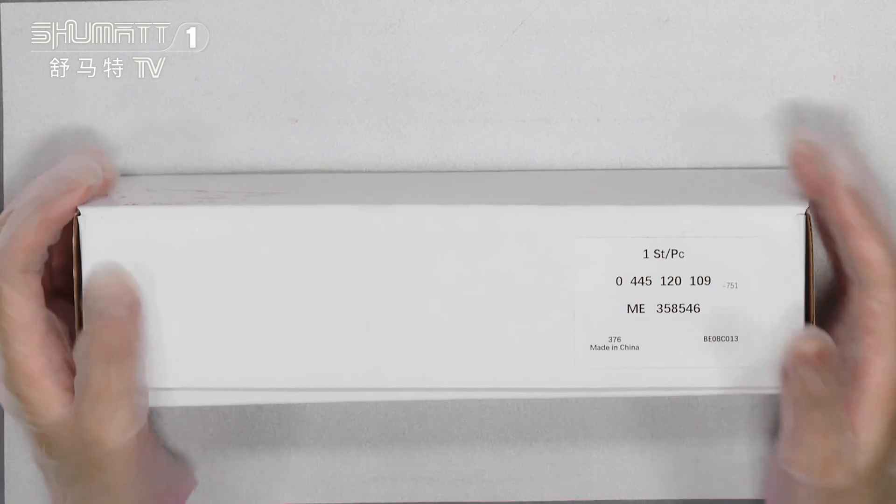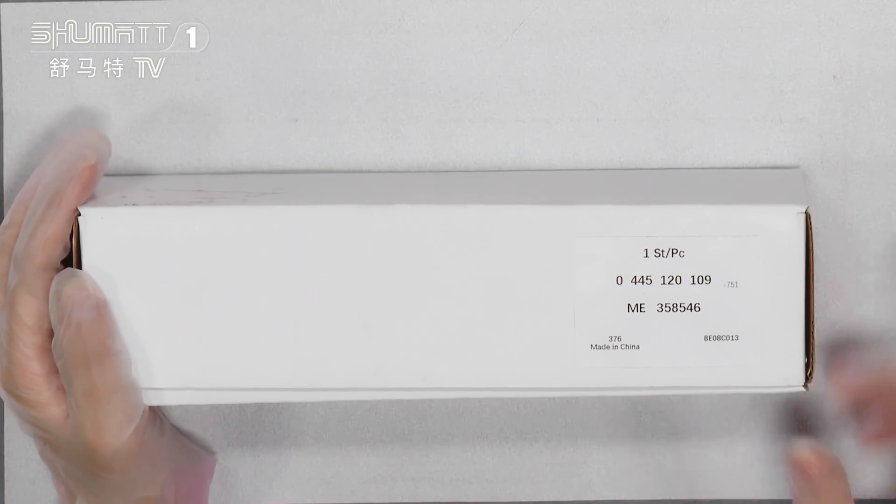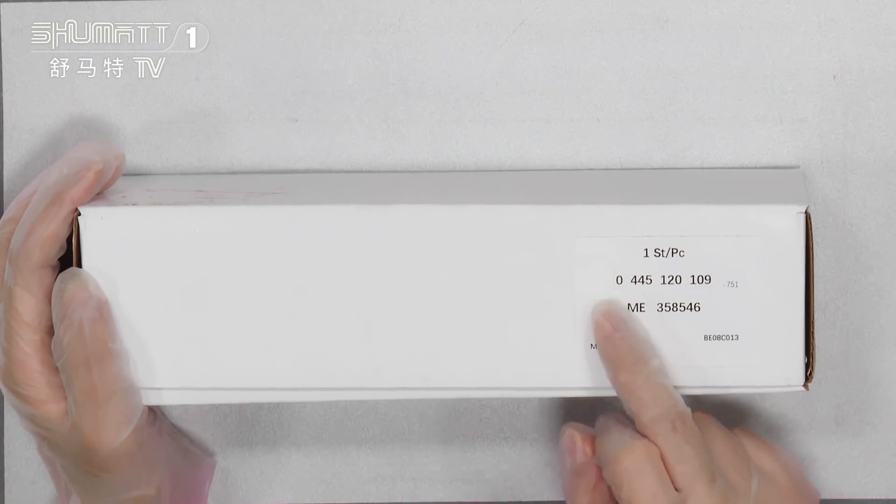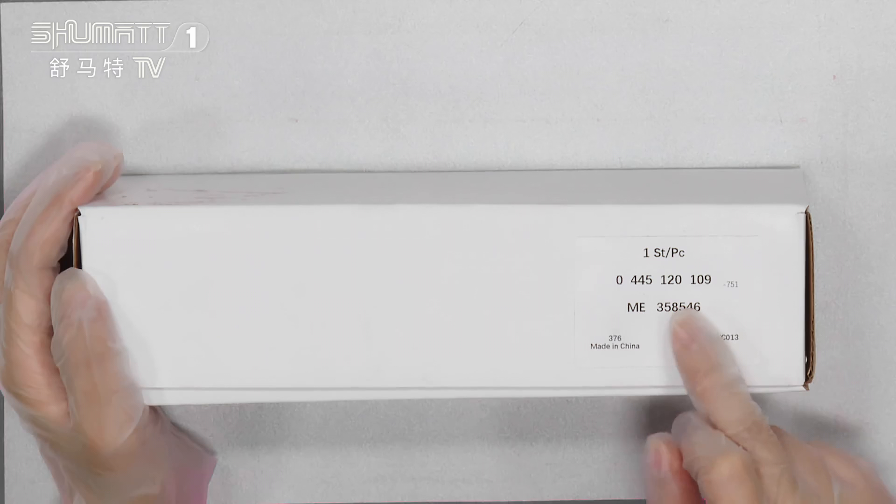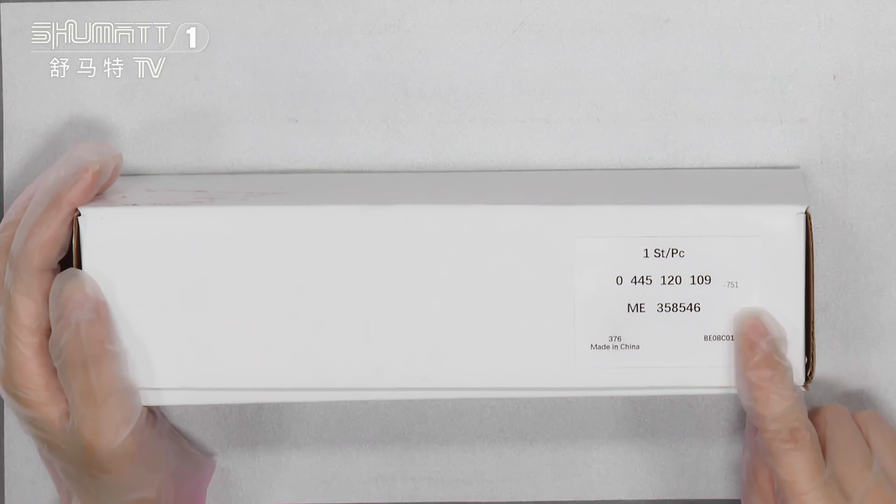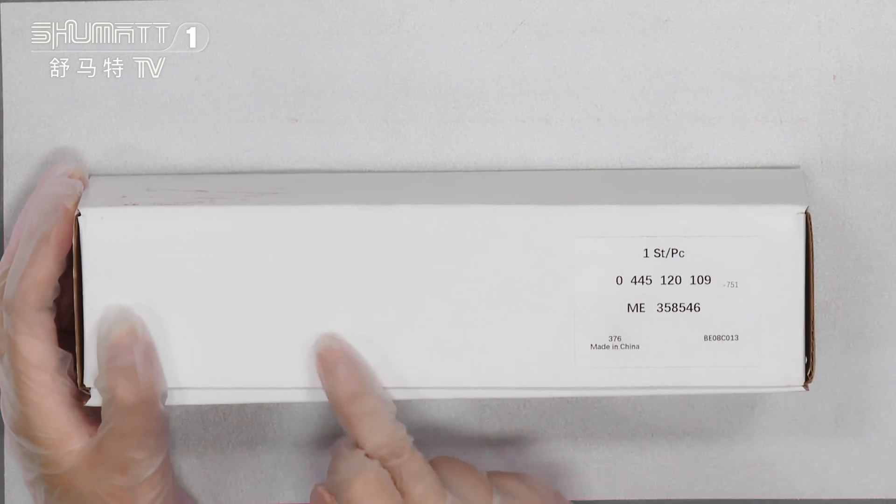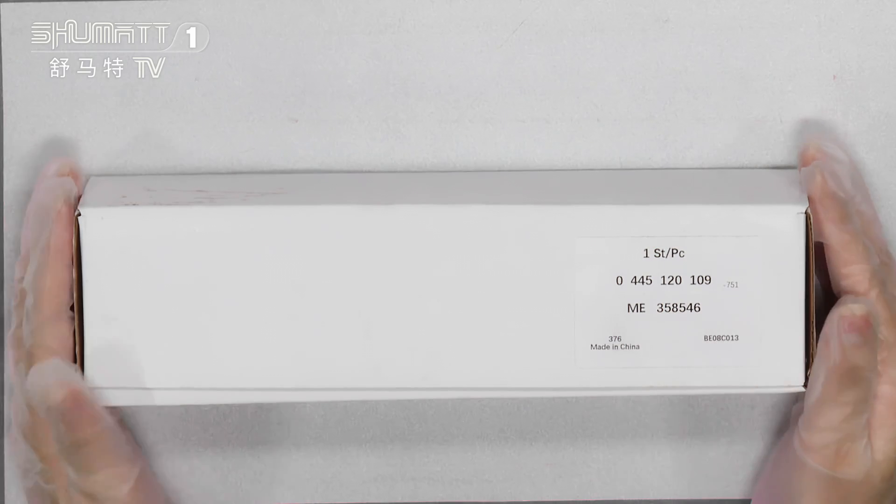First, as you can see, we pack with neutral white boxes. On this part they have a label. The product quantity is one piece each, product code is 045120109. The other information is on the label. If you want to print with your own label, logo, packaging bag, and so on, you can contact us because we always supply customized services.